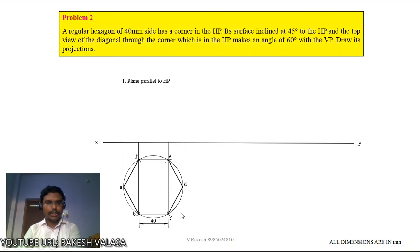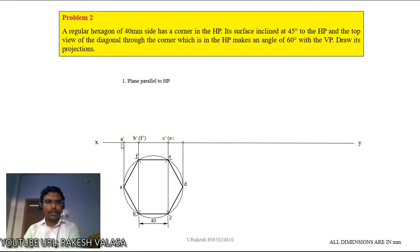Now identify the initial front view points. This is the A-dash point. When seen from the front, B is visible and F is invisible, so write B-dash over F-dash. C is visible and E is invisible, so write C-dash over E-dash, and D-dash. Draw the line from A-dash to D-dash — this is the initial front view. This completes the first stage.